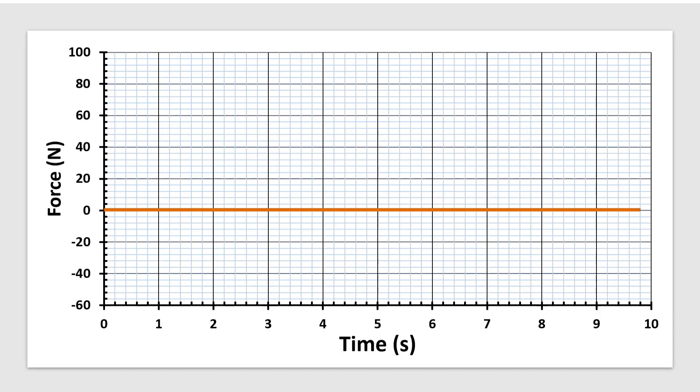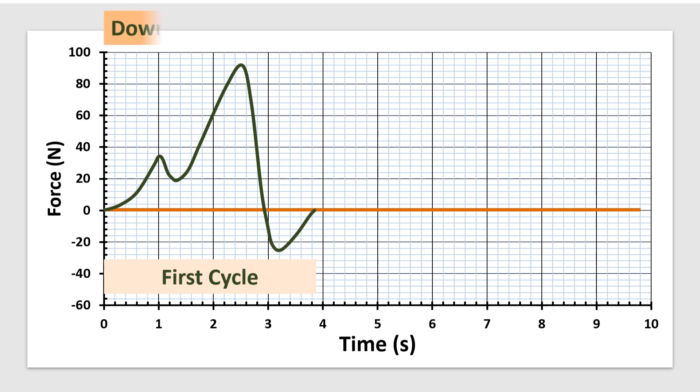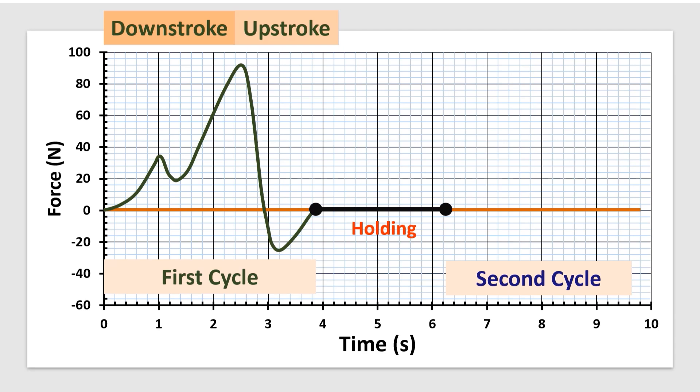Interpretation of the TPA graph needs to be understood, and it is important to define the instrumental textural attributes. In this graph we could observe first cycle compression and decompression, that is force-time curve, and downstroke or compression cycle and upstroke or decompression cycle, then holding time, that is duration gap between first and second cycles. After holding time we could observe the second cycle compression and decompression, and downstroke or compression cycle and upstroke or decompression cycle. Using this graph, I am going to explain the parameters.